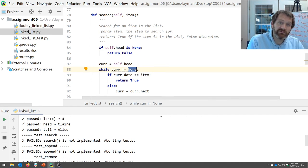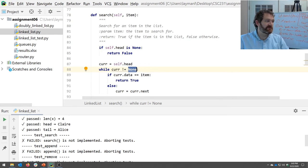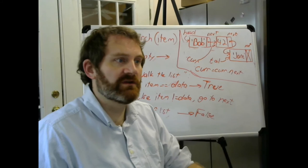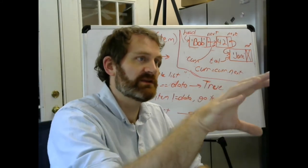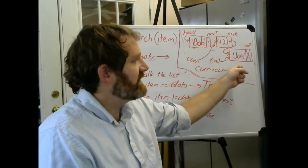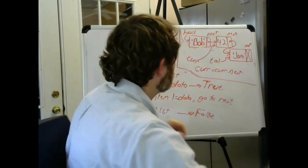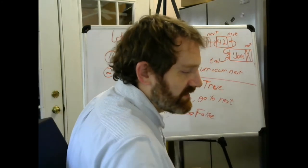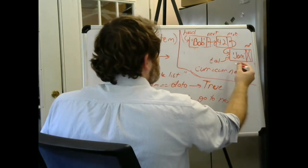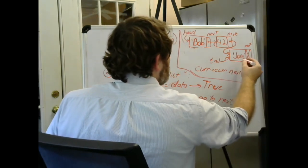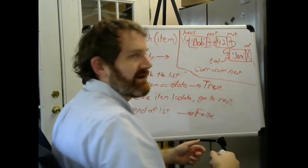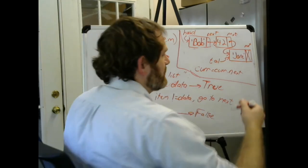When will cur equal none? Well, it will equal none when what? Which node up here has a next equal to none? Because we're doing cur gets cur dot next, that's how we keep walking. When you hit the tail. Let's say that we've gotten all the way down here, we are looking for Vanna White. We're searching for Vanna White.